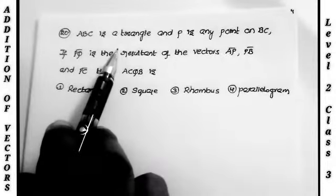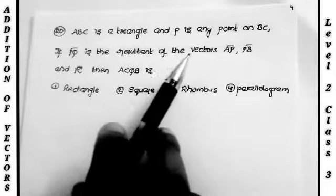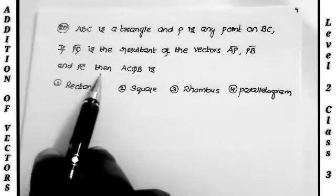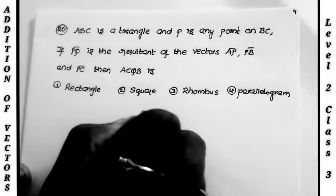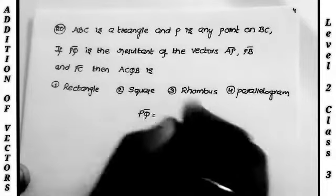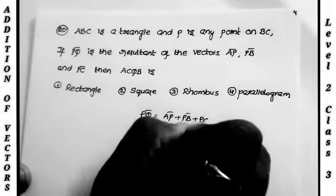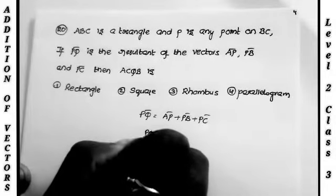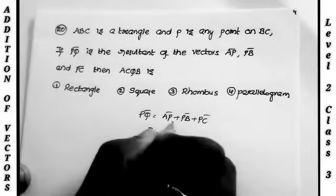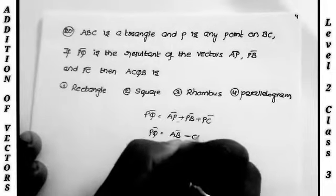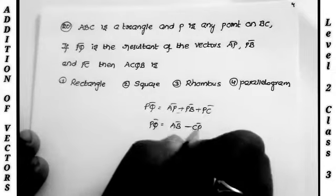Next question: In triangle ABC, P is any point on BC. If PQ bar is the resultant of vectors AP bar, PB bar, and PC bar, then what is ACQB? PQ bar equals AP bar plus PB bar plus PC bar. Now AP bar plus PB bar equals AB bar. So PQ bar equals AB bar plus PC bar. Changing the notation: PC bar becomes minus CB bar.